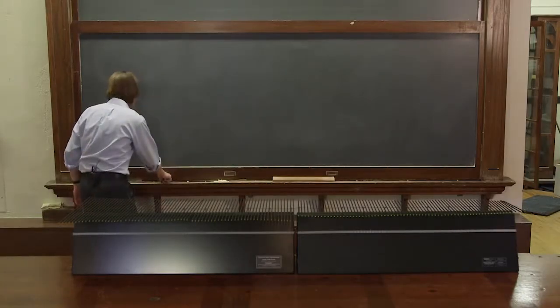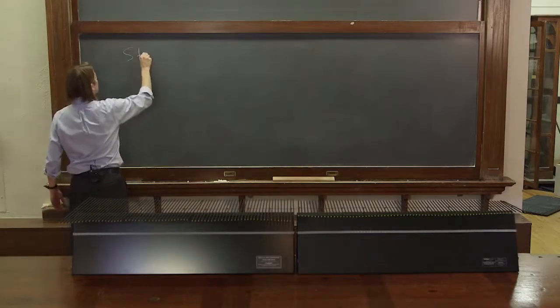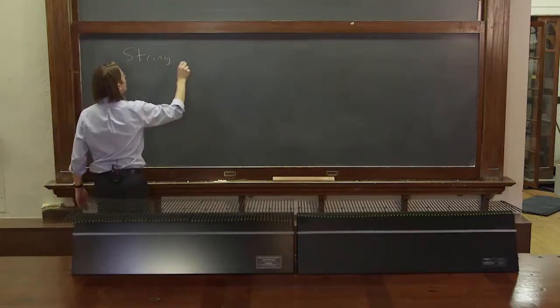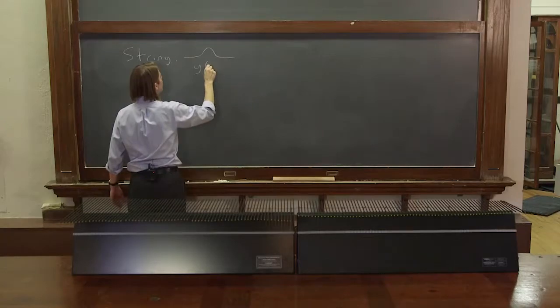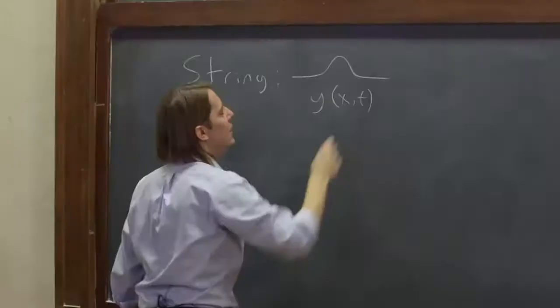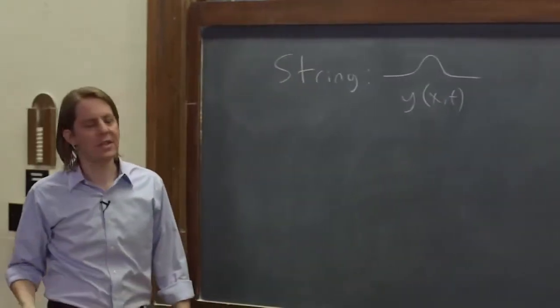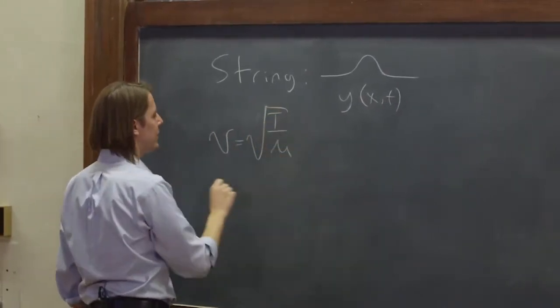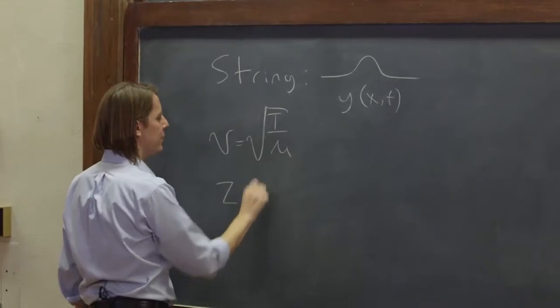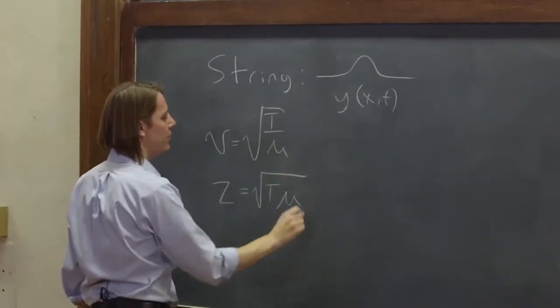So we have done most of our demos with string, and we like string. The theory works out pretty nice. We describe the y height as a function of x and t. We get the velocity as the square root of the tension over the mass density, and the impedance is the square root of the tension times the mass density.